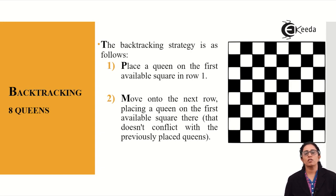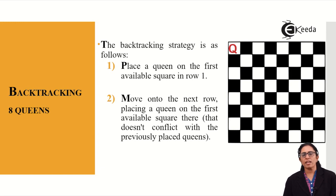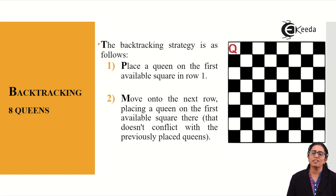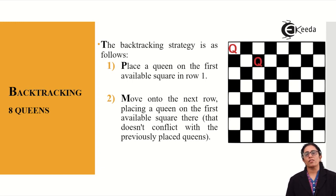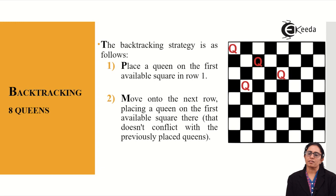Place the queen Q on the first square of row 1, then move into the next row placing a queen on the first available square that does not conflict with the previously placed queen. Queens can move row-wise, column-wise, and diagonally, so the next queen must not attack the previous one. The third queen is placed so it does not attack the first and second queens. We continue placing the fourth queen in the same manner.